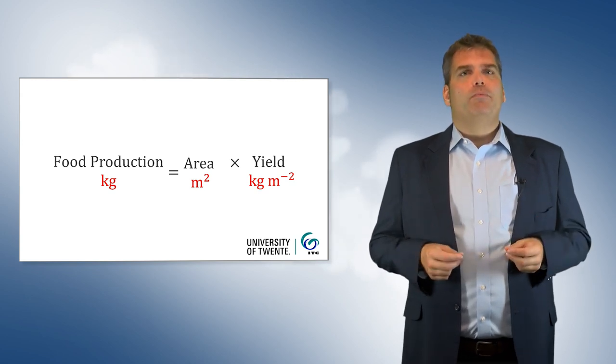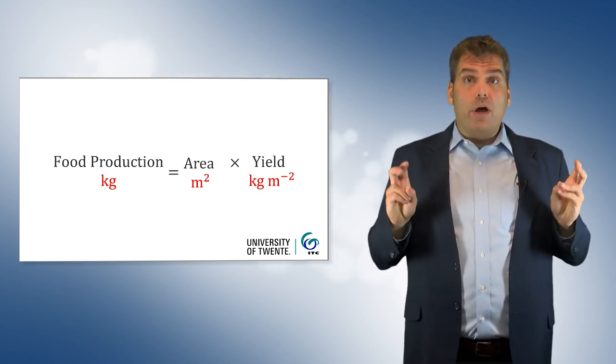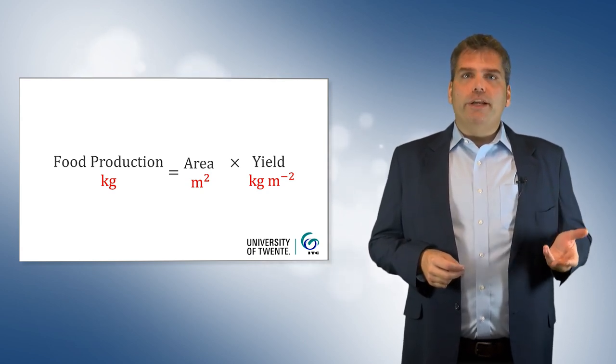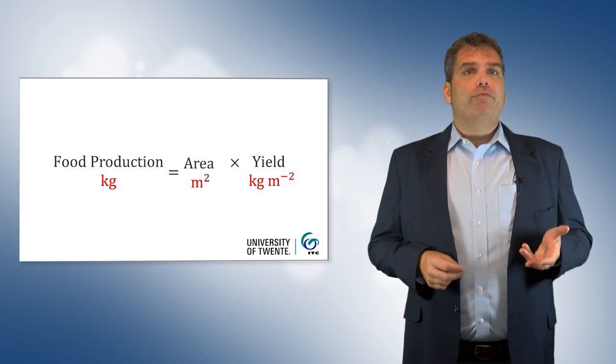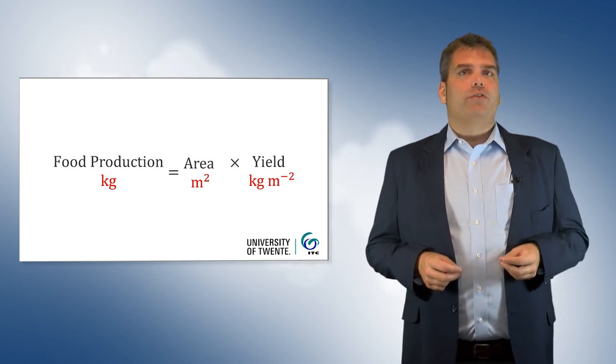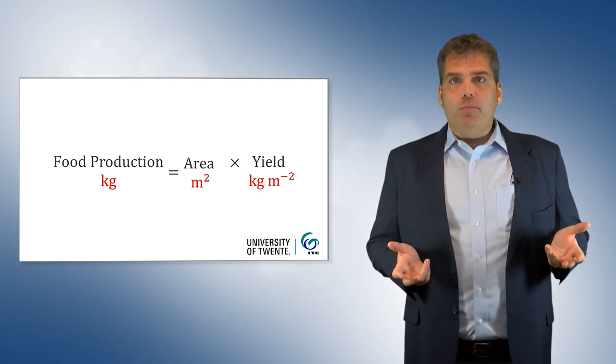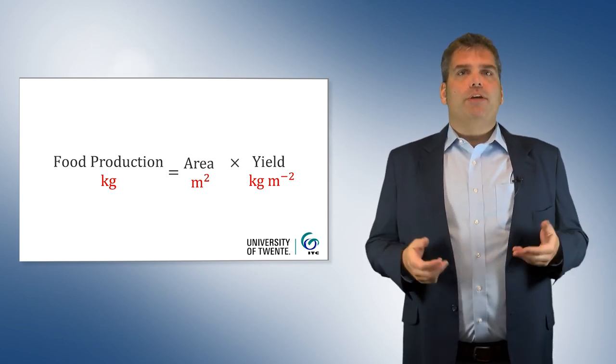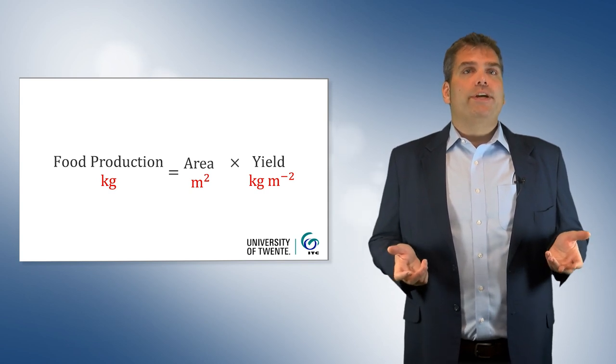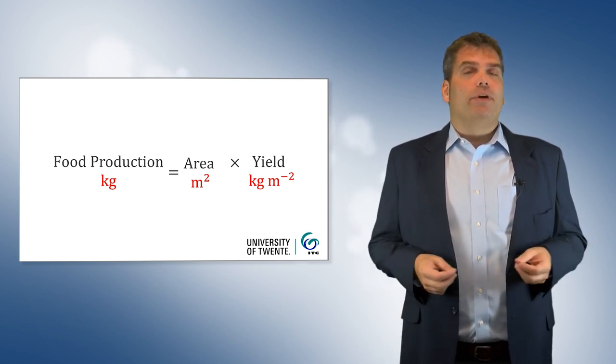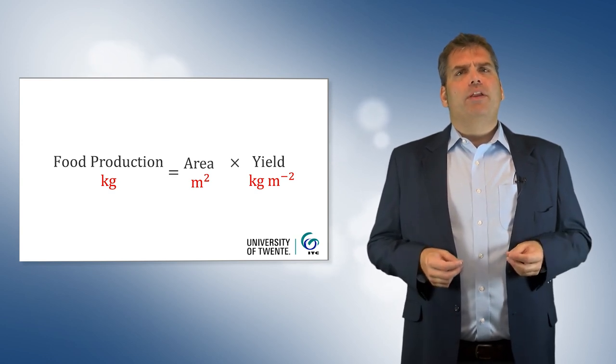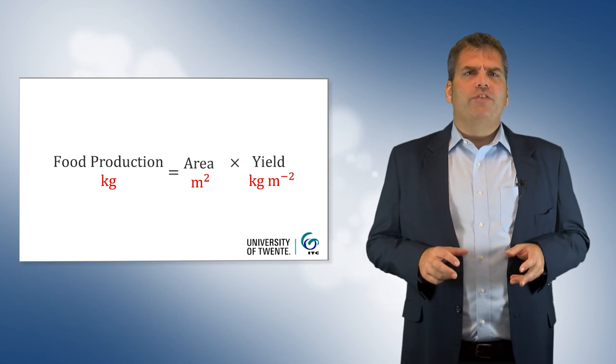In practice, however, it is difficult to determine because what defines a crop varies. Is crop area only the cultivated area or does it also include infrastructure in uncultivated areas? Should it be defined by the area planted or harvested? How should it be measured in mixed cropping systems or systems with more than one growing season as is common in the tropics? Several remote sensing techniques have been developed to estimate crop area.